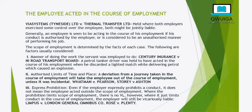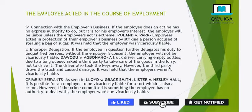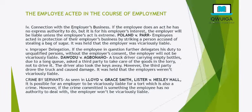Consult Rose v Plenty and Limposs v London General Omnibus Co for better understanding. The fourth factor courts may consider is connection with the employer's business. If the employee does an act he has no express authority to do, but it is for the employer's interest, then the employer will be held vicariously liable — because it is for his benefit. The exception is where the employer's act is extreme: if the employee had no express authority and the action is so extreme, then the employer cannot be held vicariously liable.